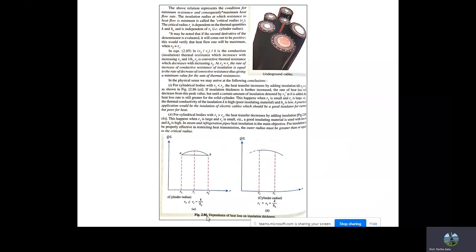The relationship derived represents the condition for minimum resistance and maximum heat flow rate. The insulating radius at which resistance to heat flow is minimum is called the critical radius. Beyond the critical radius, heat loss is minimized. The critical radius depends on the thermal quantities k and h0, and is independent of r1. It may also be noted that the second derivative of the denominator, when evaluated, comes out to be positive.